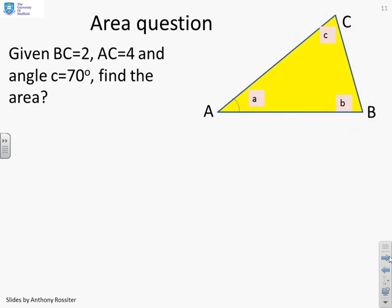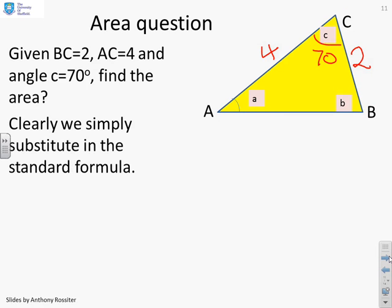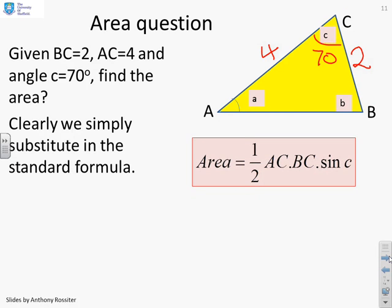So here's a question then. Find the area of this triangle. And I've been given that BC equals 2, AC equals 4, and this angle here equals 70. So fairly clearly, I can substitute straight into this formula that the area is a half times AC times BC times sine C.